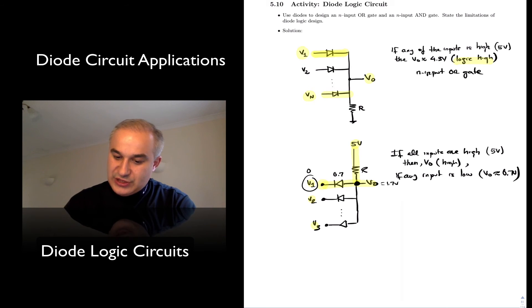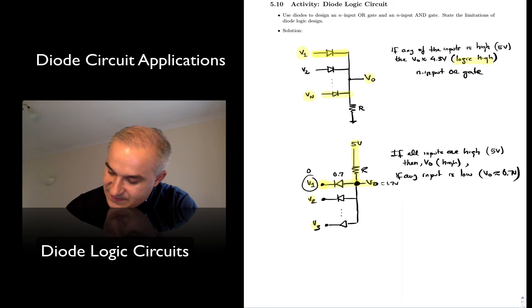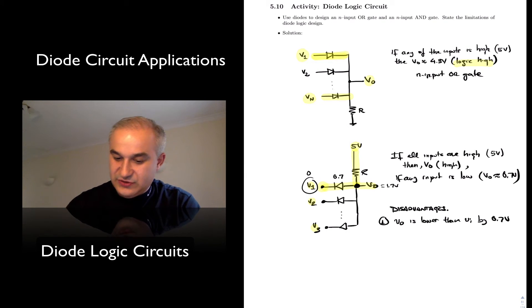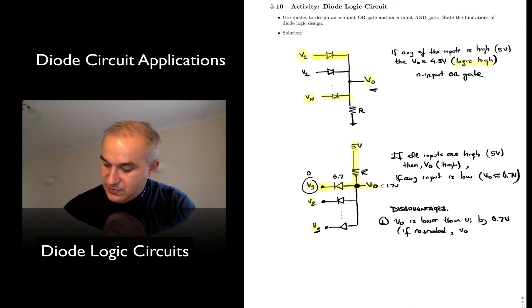Now it says here, state the limitations of diode logic design. So there are disadvantages. The first one is that the output that you get is lower than the input by 0.7V. For instance, we saw here, and this, if cascaded, if you keep cascading them, eventually Vout becomes low.